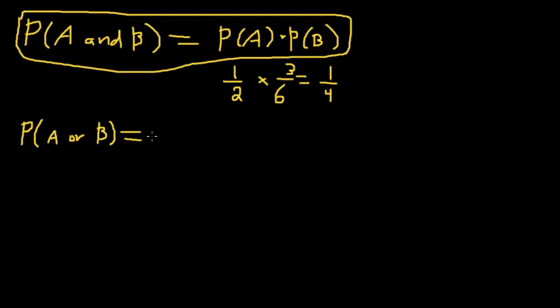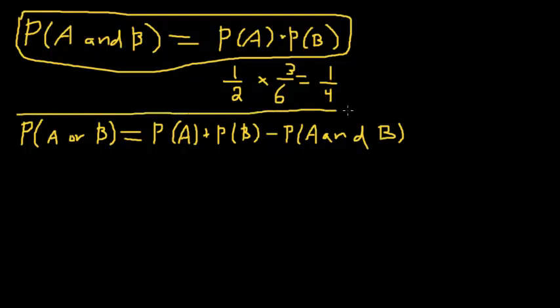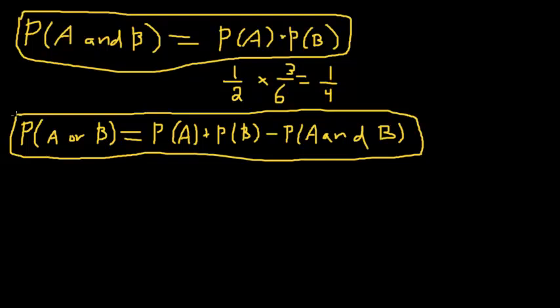The probability of A or B, if you just want to memorize an equation, is the probability of A plus the probability of B, minus the probability of A and B. And this is a pretty simple one to actually derive, so I wouldn't really memorize this. I mean, only memorize it if you really have to,